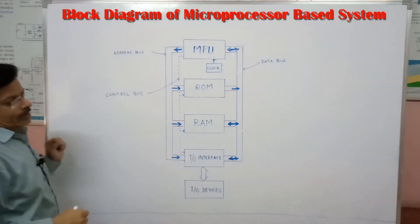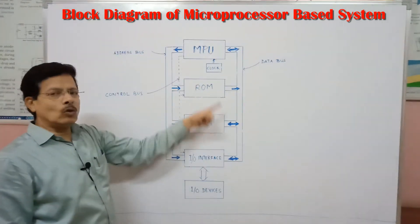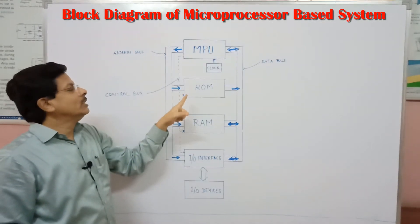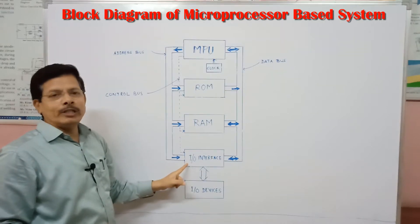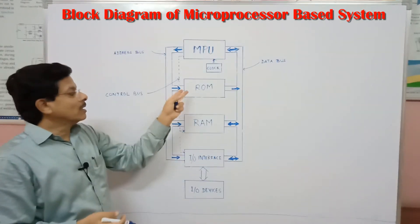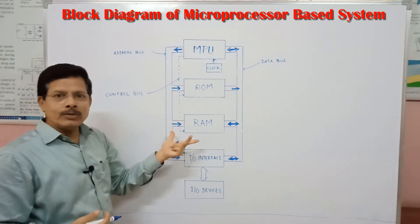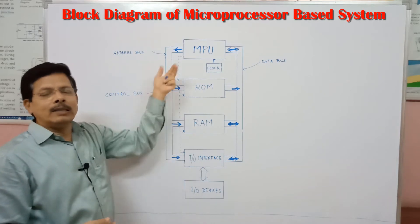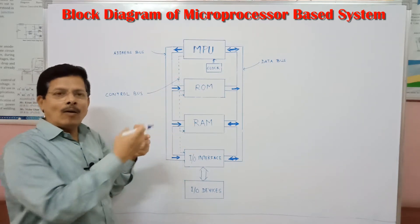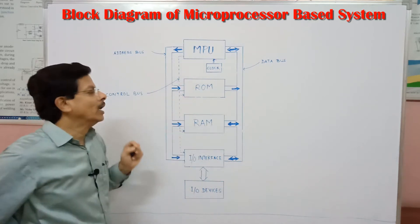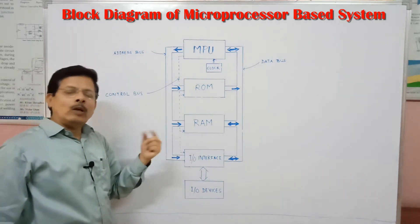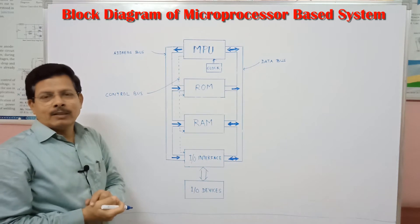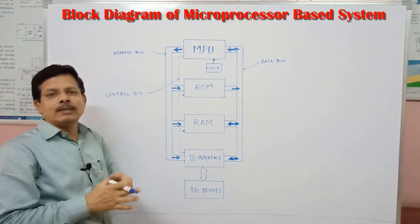Now let us see what the address bus is. The microprocessor has control over all the devices — it can select RAM, ROM, or the I/O interface circuitry. Not only that, RAM and ROM consist of hundreds of thousands of locations that have to be selected for operations: storing information or fetching information. Therefore every device and every location within that memory has a unique address, just as our home has an address.